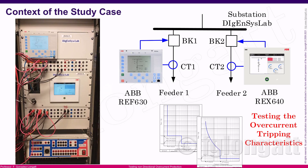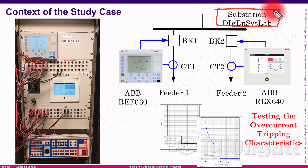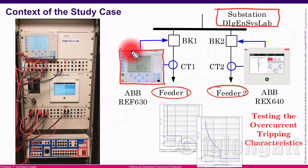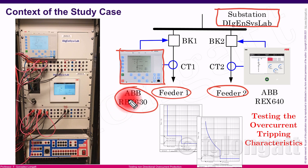Inside the DGENCYS lab, we have this virtual substation that you can see here on the right-hand side. I have configured this substation in order to have two radial feeders. We are using two top-of-the-line overcurrent relays — the feeder protection relay REF630, and for the second feeder, the REF640.